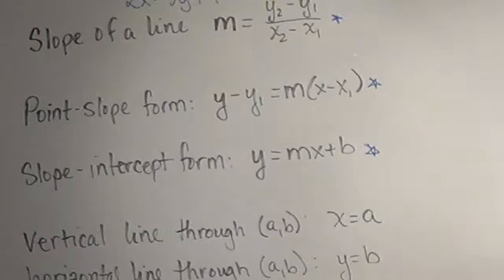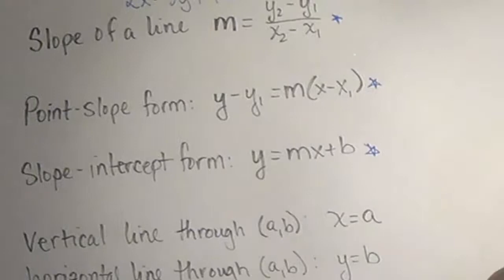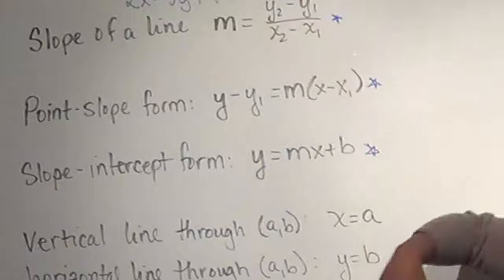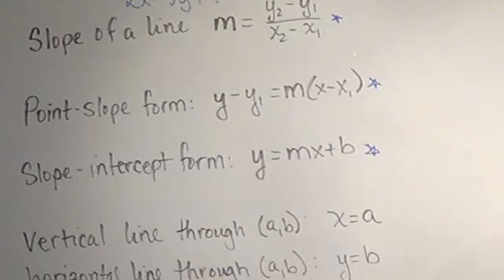The slope-intercept form is the third one that's going to be useful, and it's the form you usually want to put equations in when you're done — it's the simplified form of your linear equation. So whether it starts as a general form or point-slope form, you always want to end up here. This form is useful not only for graphing, but also for finding bits of information and solving things.